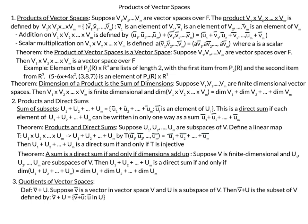Next, we define scalar multiplication on the product of vector spaces. If you have a scalar a multiplied by our m-tuple, then we just multiply each of the components by the scalar a. So we have a·V1, a·V2, all the way up to a·Vm.